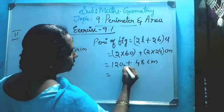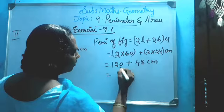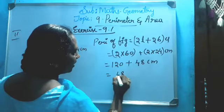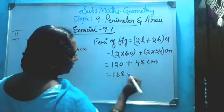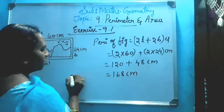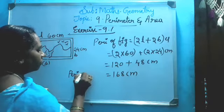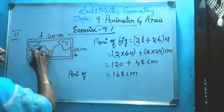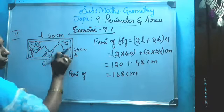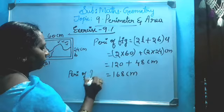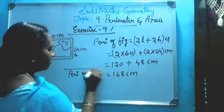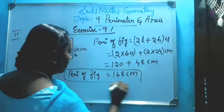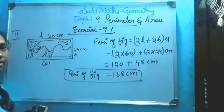Now total it: 0 plus 8 equals 8, 2 plus 4 equals 6, carry 1, write it as is. What is the answer? Perimeter of the painting board, the scenery board measurement. Perimeter of figure is equal to 168 centimeters.